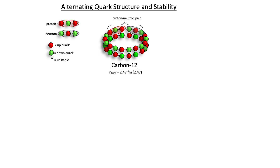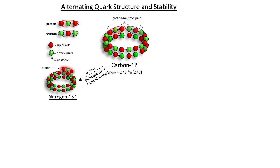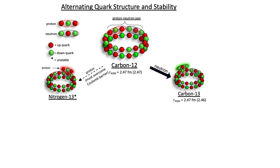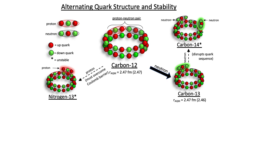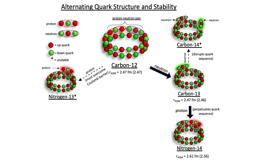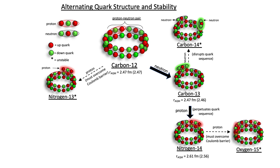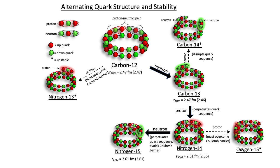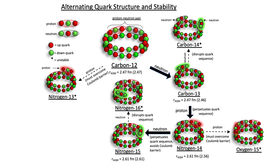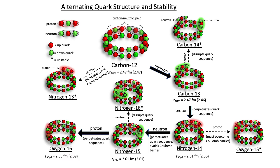Carbon-12 has two complete lithium-6 layers, and the next added nucleon will begin a third layer. Adding a proton requires overcoming the Coulomb barrier and produces unstable nitrogen-13; the preferred pathway results from adding a neutron to produce stable carbon-13. An additional neutron disrupts the alternating quark sequence and produces unstable C-14, whereas adding a proton perpetuates the linked quark sequence and produces stable nitrogen-14. A proton added to nitrogen-14 results in unstable oxygen-15; adding a neutron instead produces stable nitrogen-15. A further neutron disrupts the alternating quark sequence and results in unstable nitrogen-16, whereas adding a proton produces stable oxygen-16. In all cases, nuclear stability requires perpetuating the alternating quark sequence, and the addition of neutrons is generally favored over protons due to the repulsive Coulomb barrier.